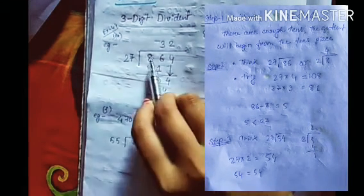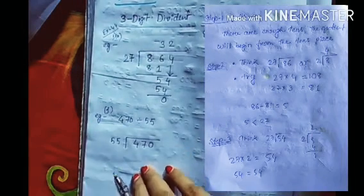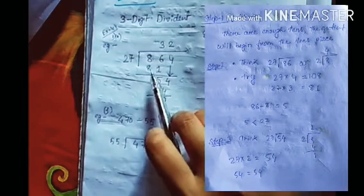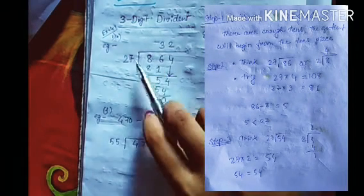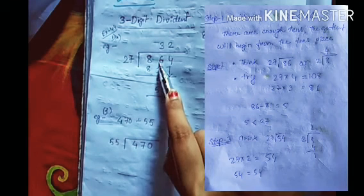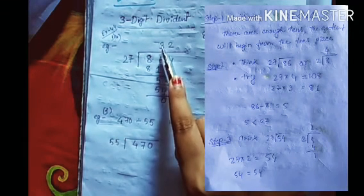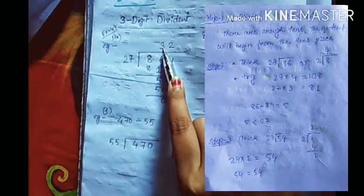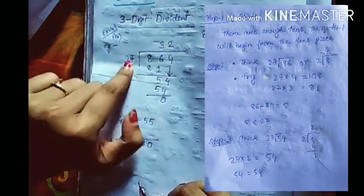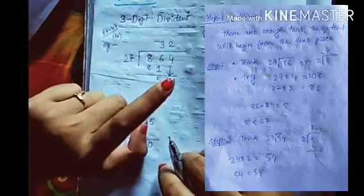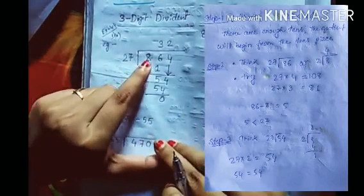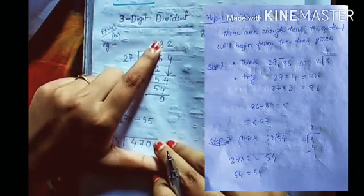Since 27 is smaller than 86, yes we can consider two digits. Now you can see there are enough tens, so the quotient will begin from the tens place. As you can see, 27 multiplied by 3 gives 81. Since we considered a two-digit number, the quotient will start from the tens place. So we have to think what the quotient will be.